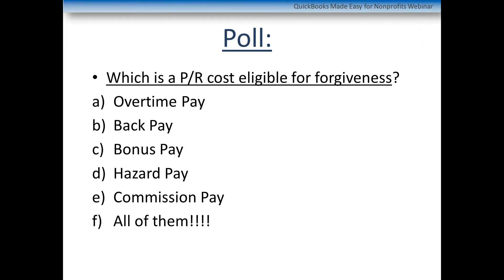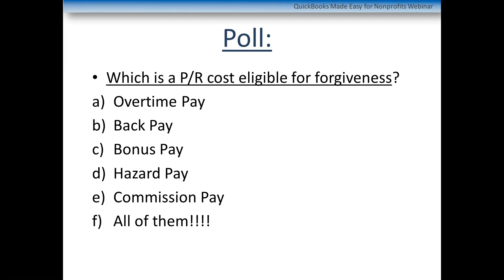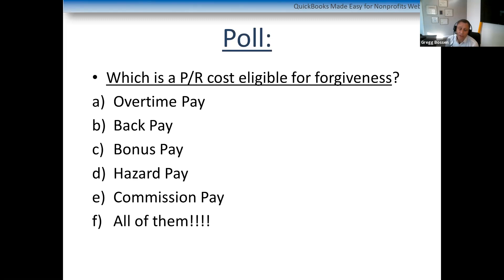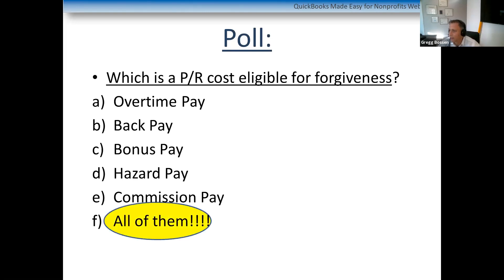Question about housing allowance not being on the 941: what would you use to prove to the bank it was paid? Probably a copy of the canceled check, or if it's not part of their normal wage, show them the canceled check and have a calculation of how you arrived at the housing allowance. If you use ADP, you can have it put in box 14 on the W-2 so you won't have to worry about it.